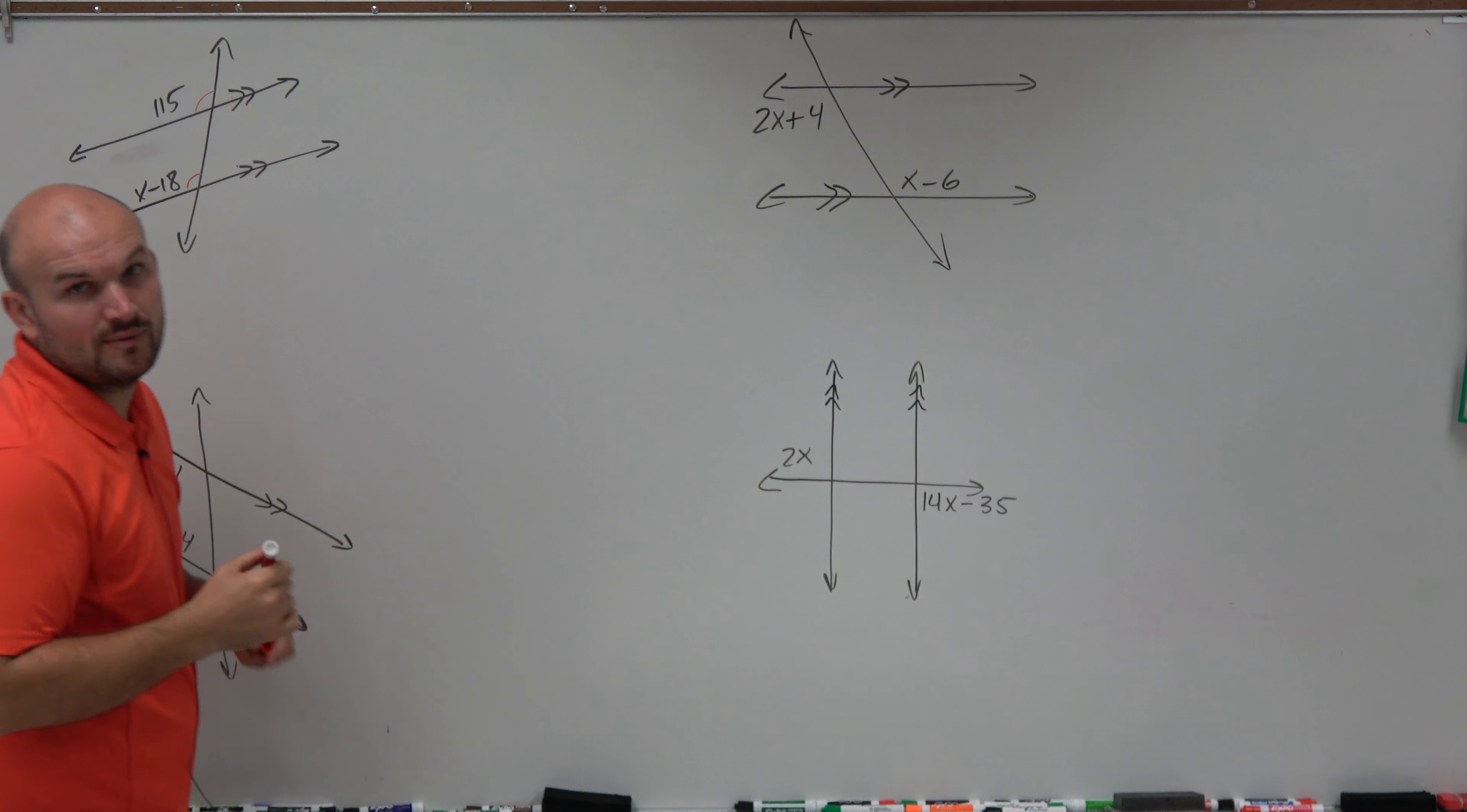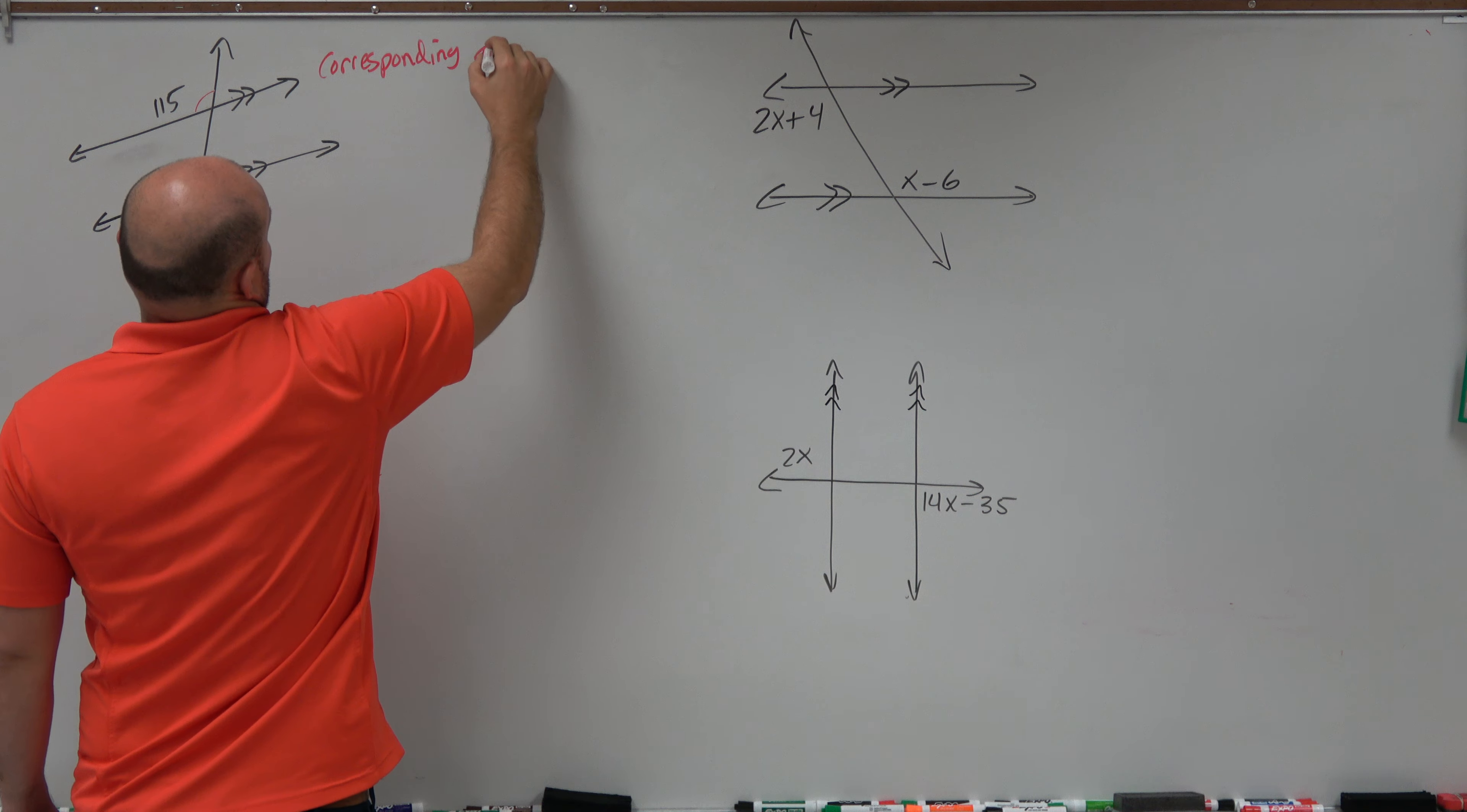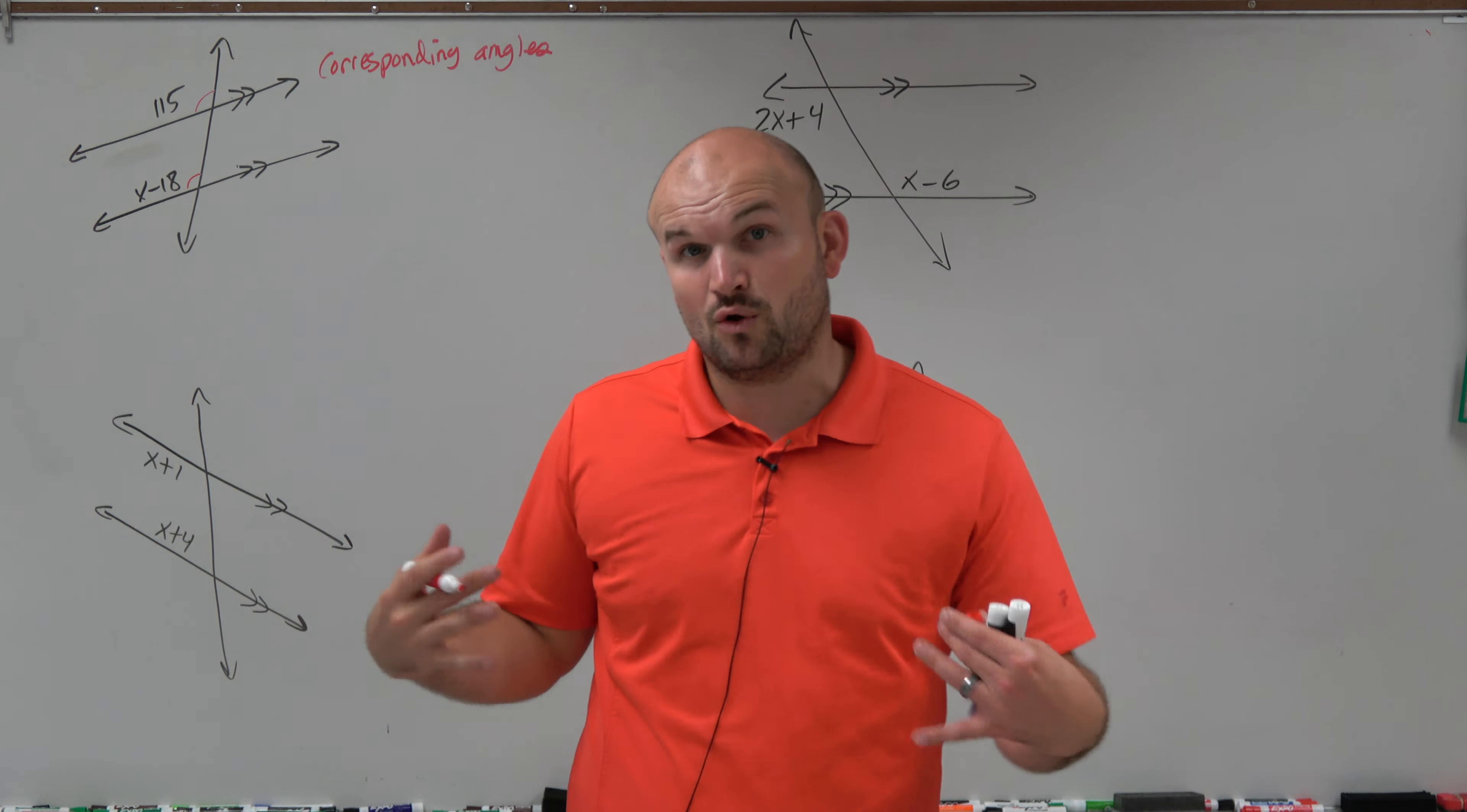So in this case, you can see that these two angles are in the exact same position of the intersection. They're in the top left quadrant. So those are what we call corresponding angles.